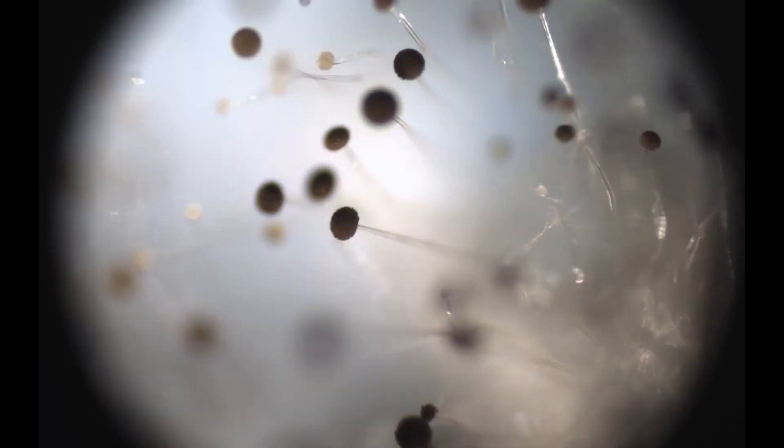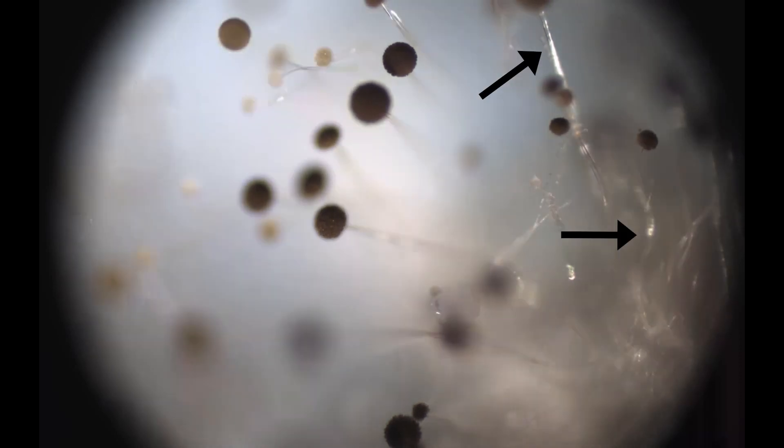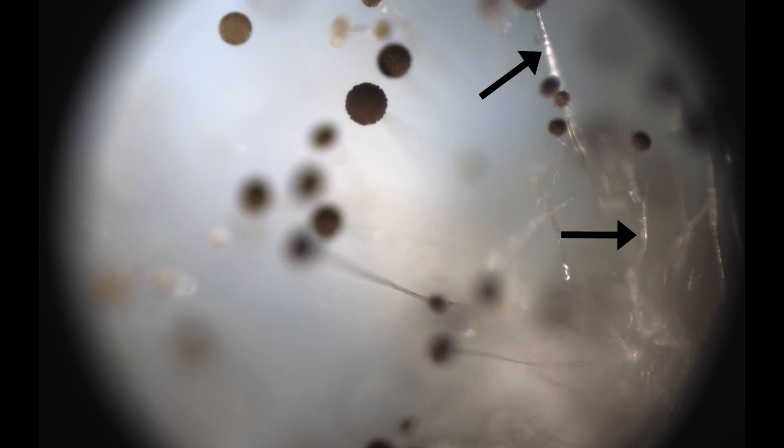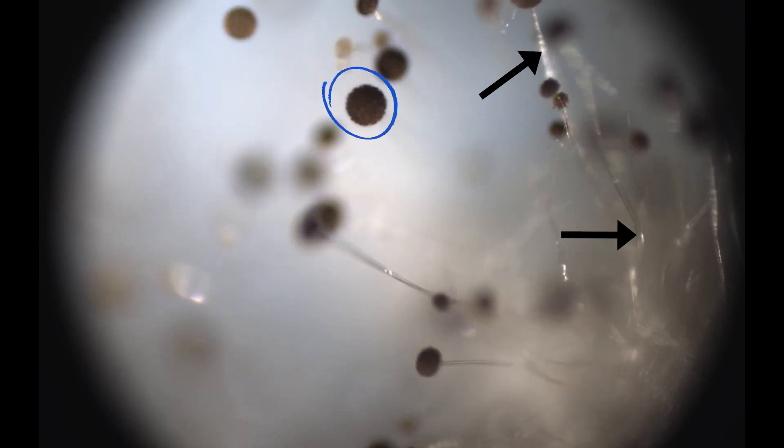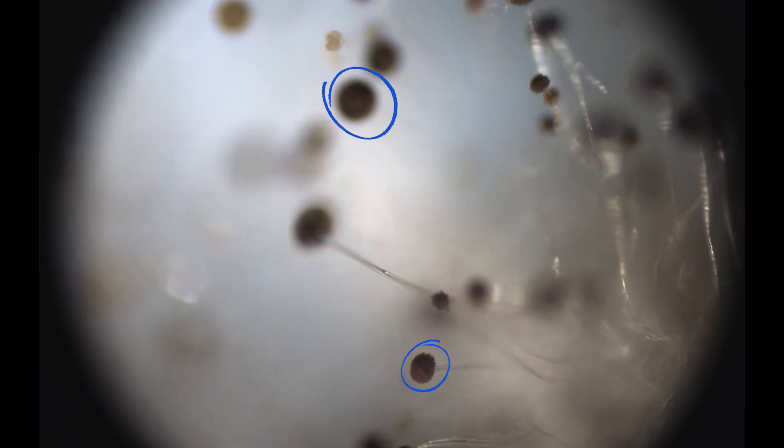These fungal bodies can be described very similarly to that of a flower. These clear stem-like structures are of specialized hyphae called the conidiophore. Its function is to support these ball-shaped structures called the vesicule. The vesicule is where the spores are produced, just like a flower with its pollen.